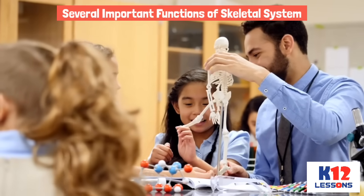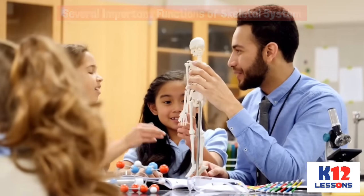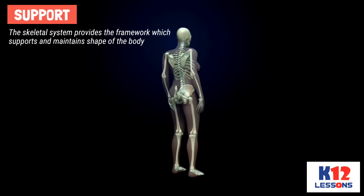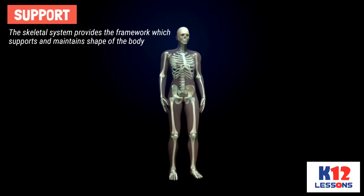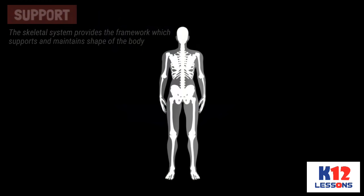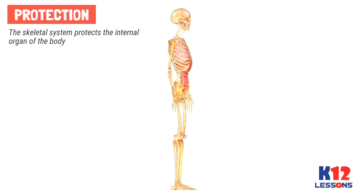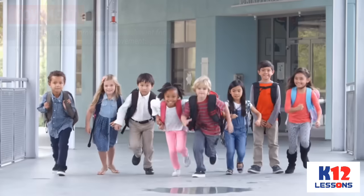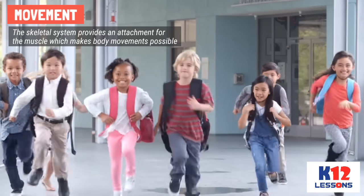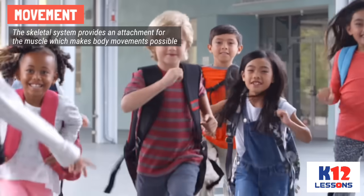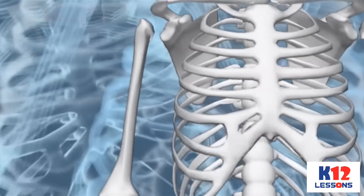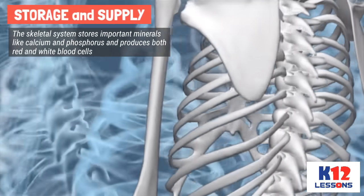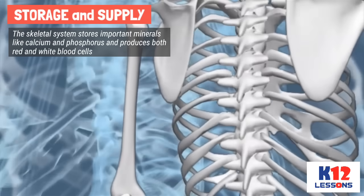The human skeletal system has several important functions. Support: the skeletal system provides the framework which supports and maintains the shape of the body. Protection: the skeletal system protects the internal organs of the body. Movement: the skeletal system provides attachment for the muscles, which makes body movements possible. Storage and Supply: the skeletal system stores important minerals like calcium and phosphorus, and produces both red and white blood cells.